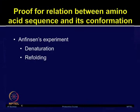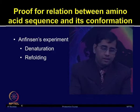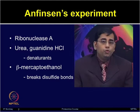Let me explain how this experiment worked. To establish proof for the relationship between amino acid sequence and its conformation, Christian Anfinsen in the 1950s performed an experiment involving two steps: denaturing and refolding. In this classical experiment, Anfinsen used the protein ribonuclease A along with a few denaturants.